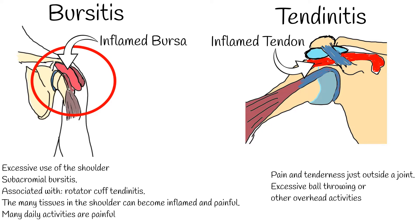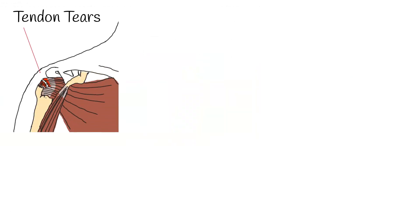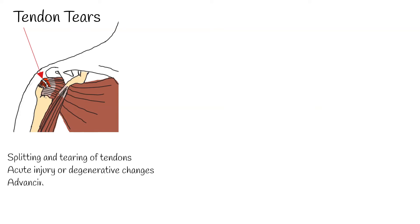Tendon tears. Splitting and tearing of tendons may result from acute injury or degenerative changes in the tendons due to advancing age, long-term overuse and wear and tear, or a sudden injury. These tears may be partial, or may completely separate the tendon from its attachment to bone.